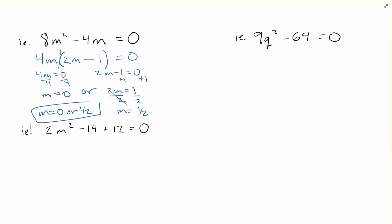Taking a look at another example here, same idea. I'm noticing that I've got a number at the front, so I might ask myself if I've got common factors, and I can see that I've got a 2. So if I factor out my 2, I get m squared minus 7m plus 6 is equal to zero.